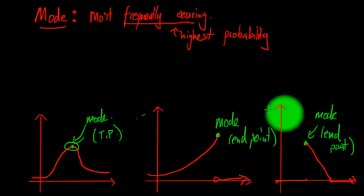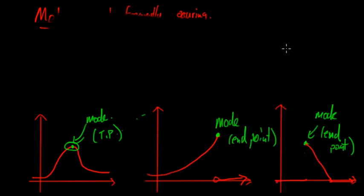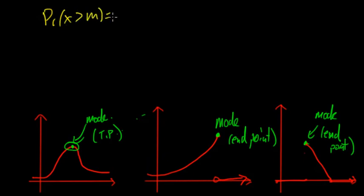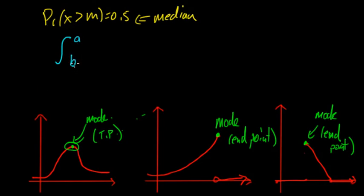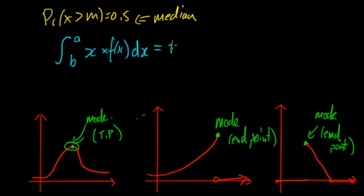In summary, for the three measures of continuous distributions: the mode is found by identifying the peak of the function. The median is found by solving P(X > m) = 0.5. The mean is found by integrating x times f(x) dx from a to b, where a and b are either the domain limits or ±infinity — remembering that if f(x) = x, then x·f(x) = x².